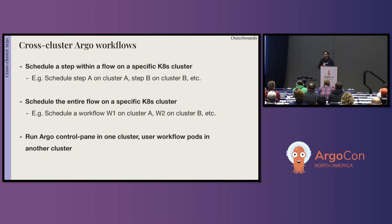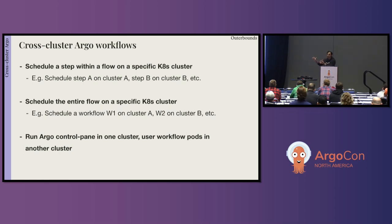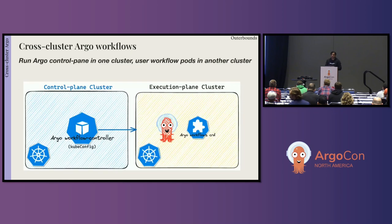The third and most interesting interpretation is that the Argo control plane — the Argo workflow controller that sits in a Kubernetes cluster, watches for workflow objects, and executes steps honoring sequentiality and parallelism — runs in one cluster while the actual workflow pods execute in a different cluster. And that is one of the main themes of what we are going to talk about today.